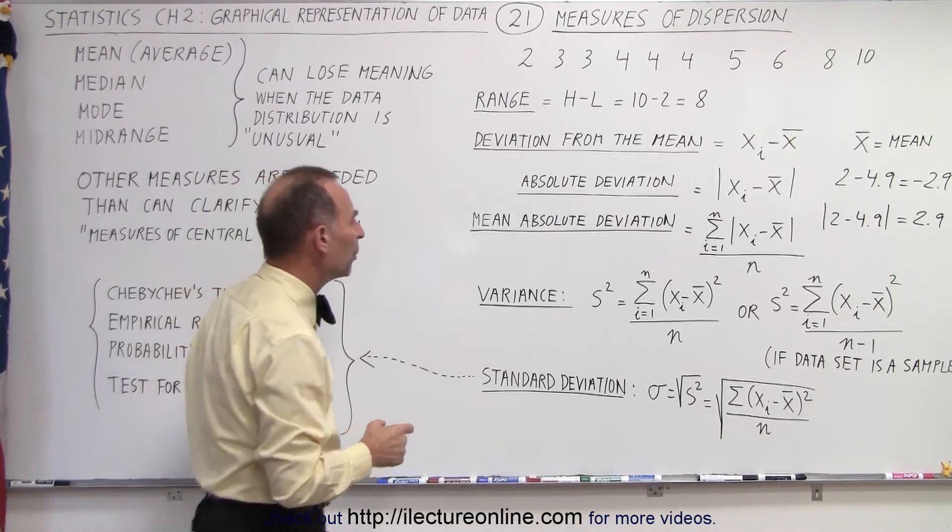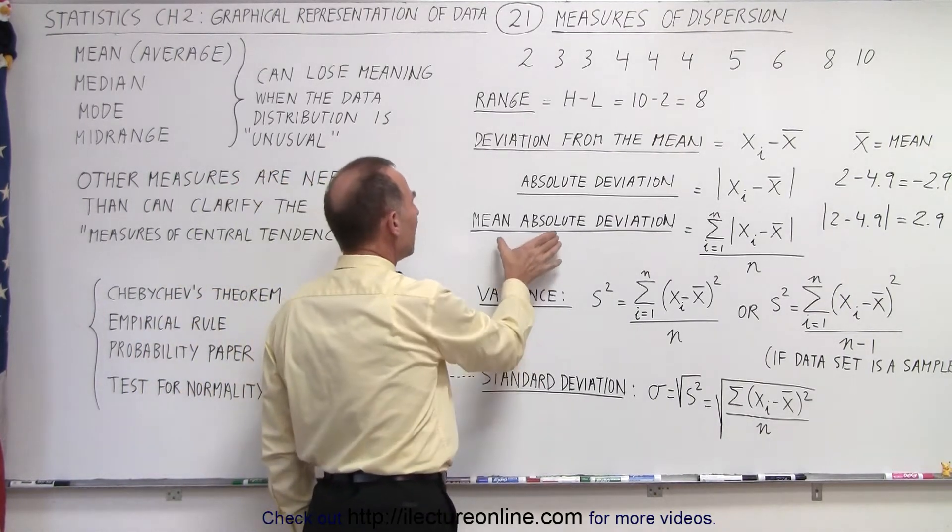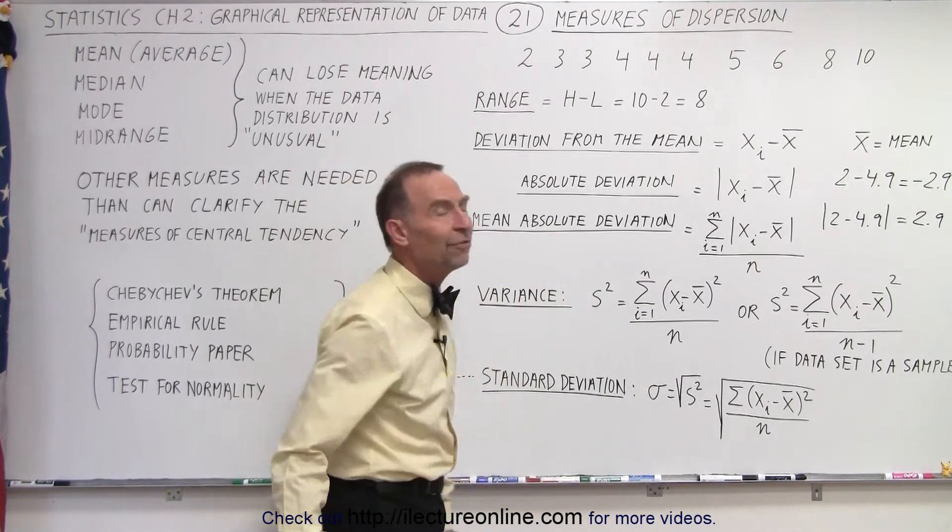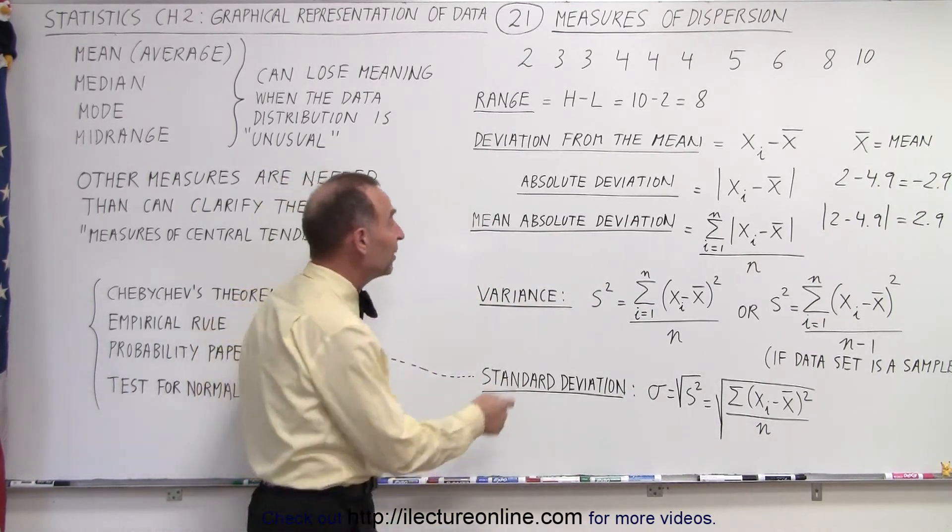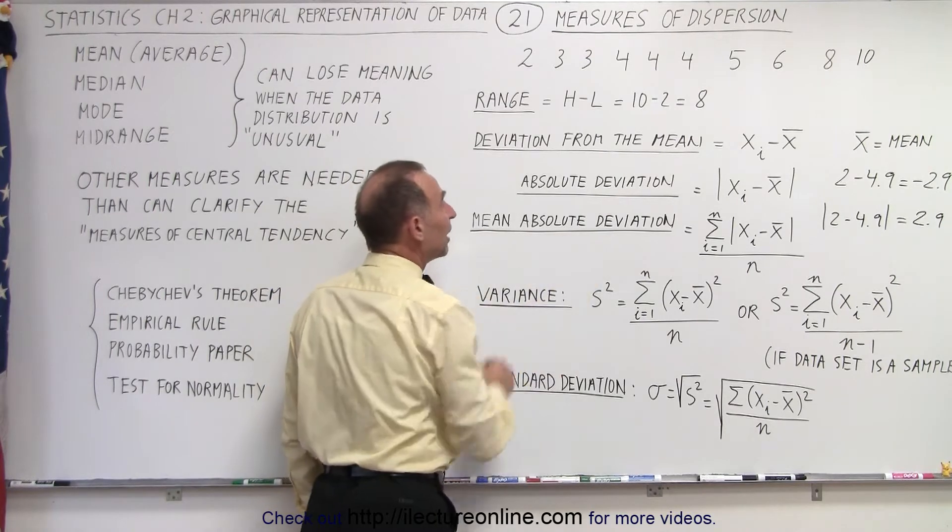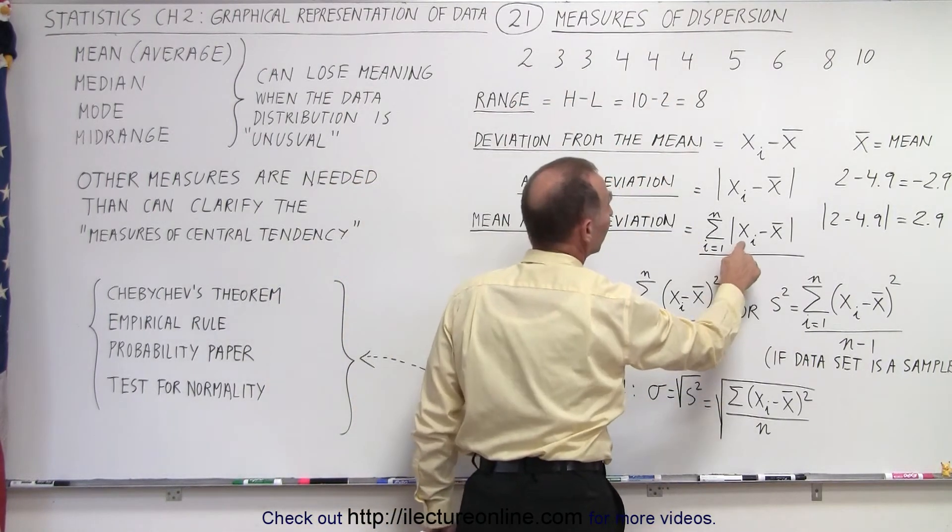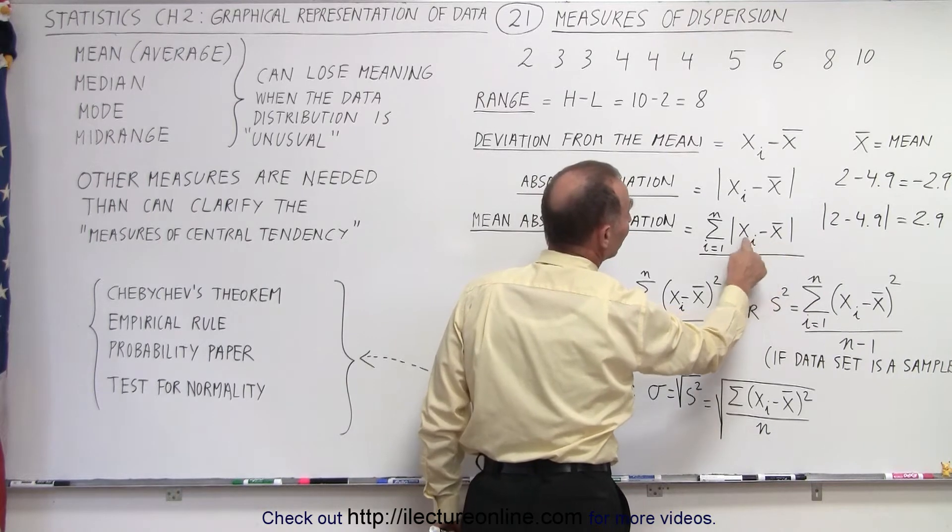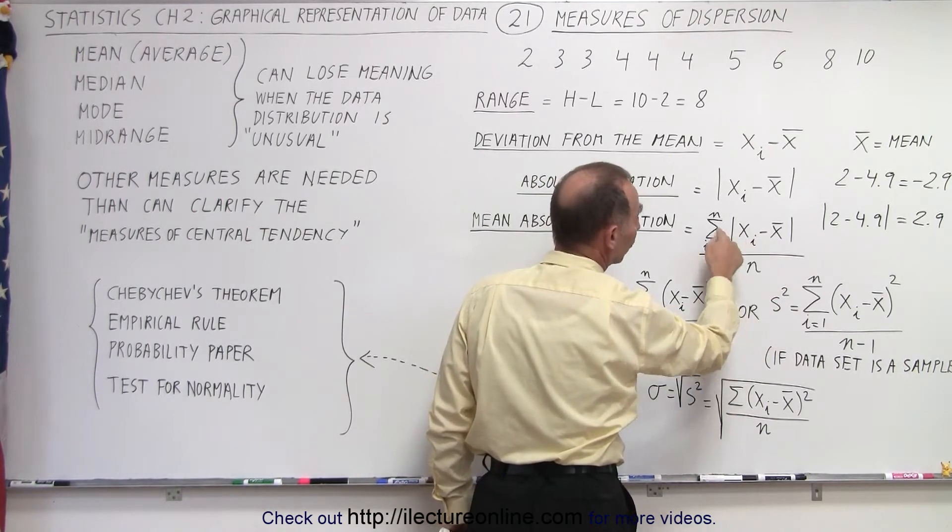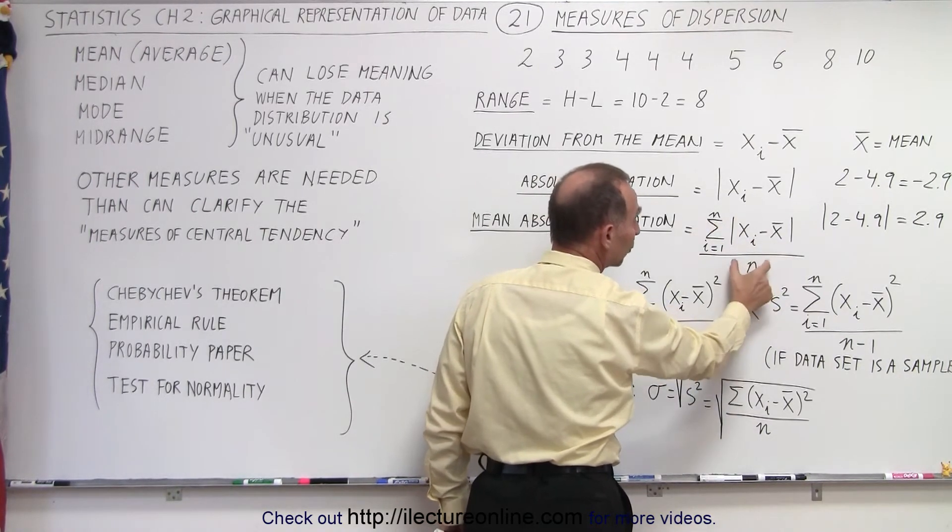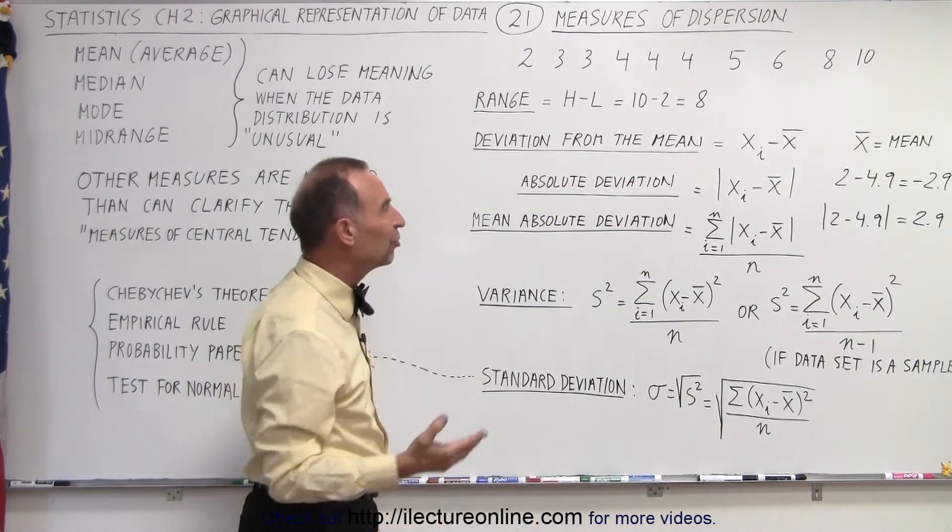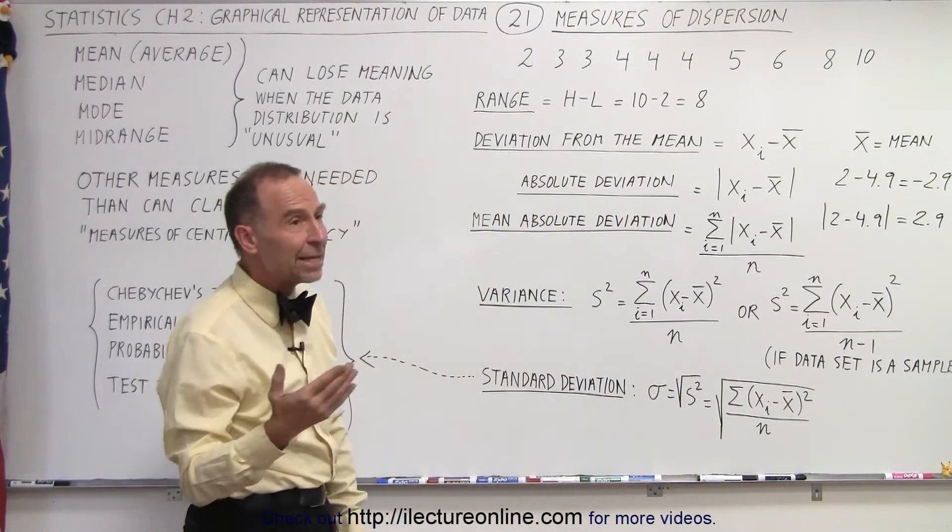Sometimes we want what we call the mean absolute deviation. In other words, the average of the absolute deviation. We're going to take every one of those values. We're going to take the difference between the average and that particular value. We're going to sum them all up and then divide by the total number of values. That gives us the average deviation from the mean.